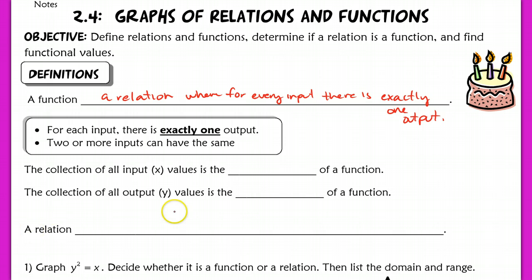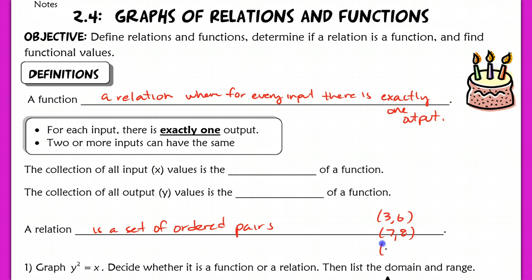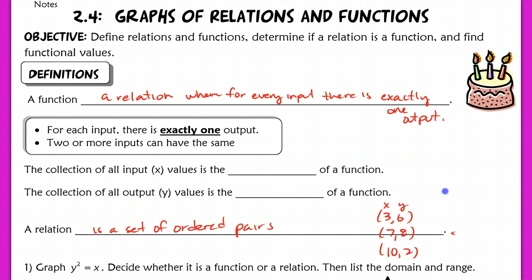A relation is just a set of ordered pairs — it doesn't have anything special necessarily about it. So any set of ordered pairs, like (3,6), (7,8), (10,2) — if you were to draw this out, since you have x inputs and y outputs, this represents a relation. A function is a special type of relation where, for every input, there is exactly one output.